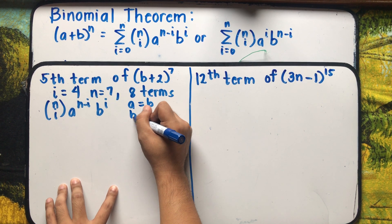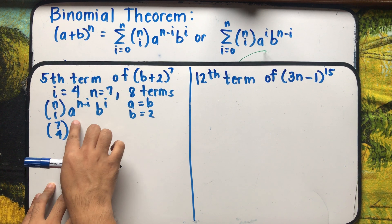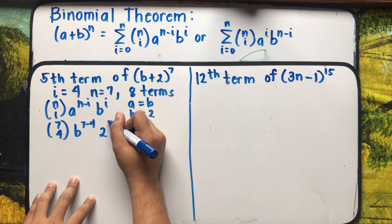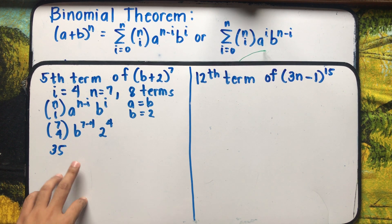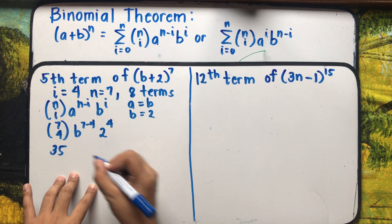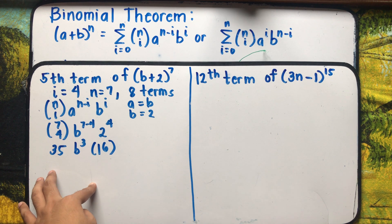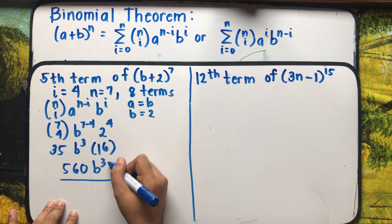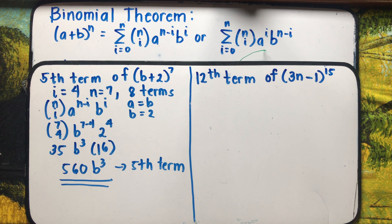Substituting: 7C4 times b raised to (7-4) times 2 raised to 4. 7C4 equals 35. b raised to 3 is b cubed. 2 raised to 4 is 16. 35 times 16 equals 560. Therefore the fifth term of (b+2)^7 is 560b³.